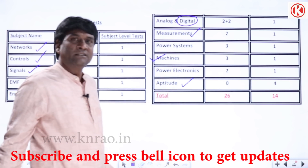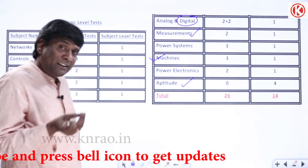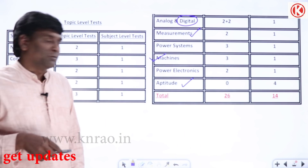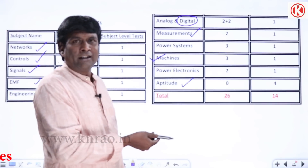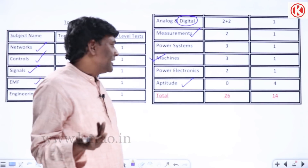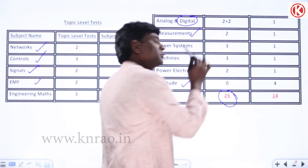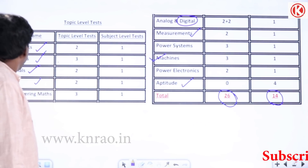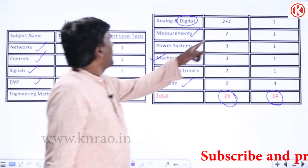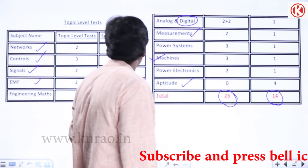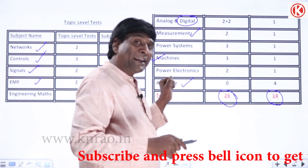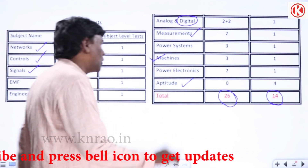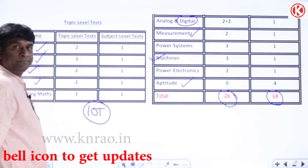By taking machines at the start, even if you have less time for power systems, you can directly jump into one topic, clear it, and come out. Now let me take the online test reference. A total of 26 topic-level tests and 14 subject-level tests are being provided. In that, mathematics has 3 tests, digital has 2 tests, analog has 2 tests — so 5 tests are planned for later. Power systems has 3 and power electronics has 2, making 10 tests not planned immediately, and the remaining 16 tests we are planning to take up.